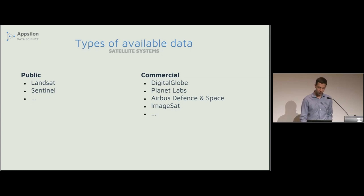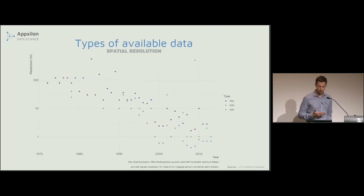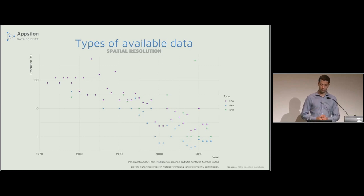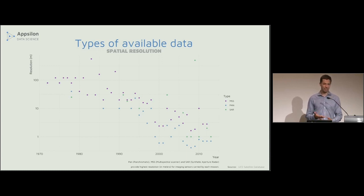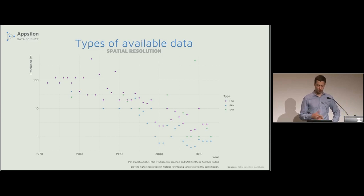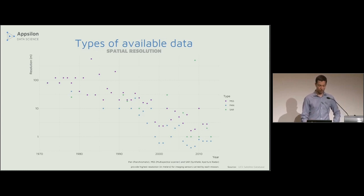The most important parameters to consider when choosing a data source: first, spatial resolution — the higher the resolution, the more details we can see, but there are trade-offs. On this plot you can see how spatial resolution changed over the years: in 1970 we started with 100 meters and now we're down to 25 or 30 centimeters. Different colors correspond to different sensors; visible light sensors have the best resolution while other sensors generally have slightly lower resolution.